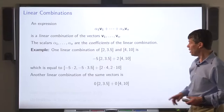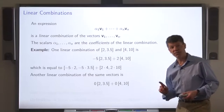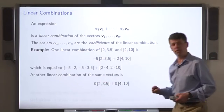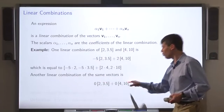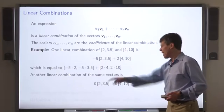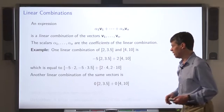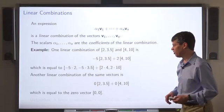Another linear combination of the same vectors is: multiply the first one by 0, the second one by 0, and add them up. And of course, you end up with the all-zeros vector.